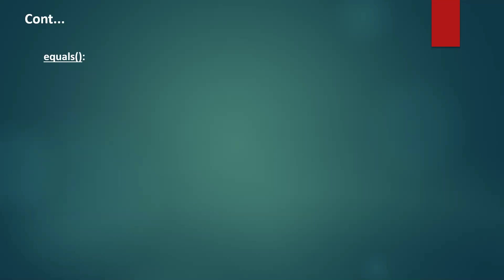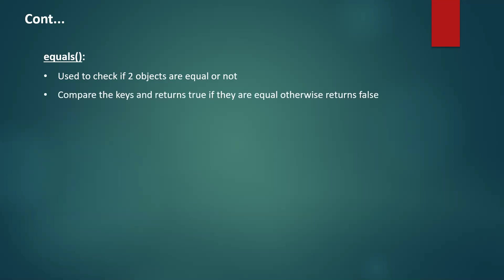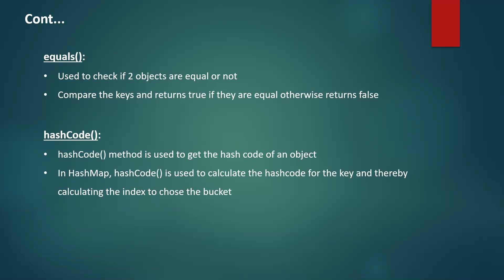The equals method is defined in the Object class, and since every class directly or indirectly extends Object, equals is available for all classes. It is used to check if two objects are equal or not. In HashMap, we use the equals method to compare keys — it returns true if they are equal, otherwise false. We also use the hashCode method, which is also present in the Object class. The hashCode method is used to get the hash code of an object, essentially a memory reference. In HashMap, we use hashCode to calculate the hash code for the key and thereby calculate the index to choose the bucket for the node.